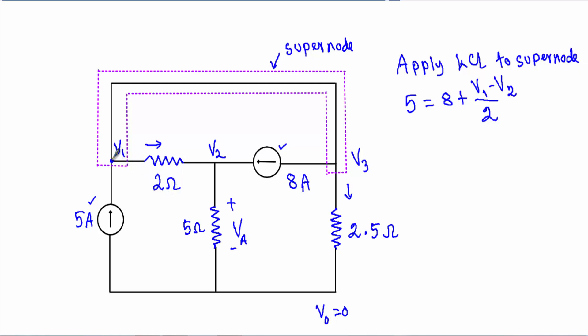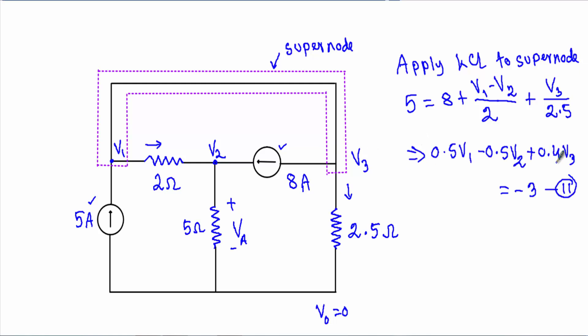The voltage difference between the two terminals of this 2 ohm resistor — I assume node 1 is at higher potential than node 2. The current through this 2.5 ohm resistor is also unknown, so I write plus V3 divided by 2.5. Simplifying this equation gives: 0.5 V1 minus 0.5 V2 plus 0.4 V3 equals minus 3. That will be our equation number 2.